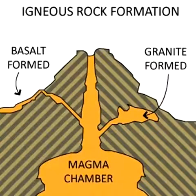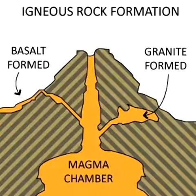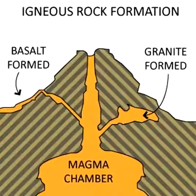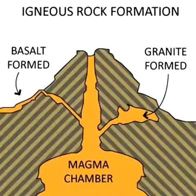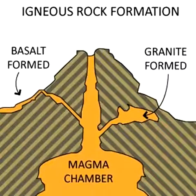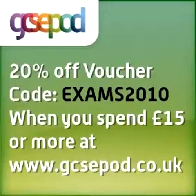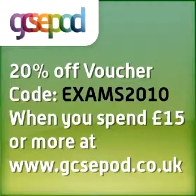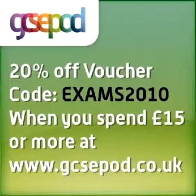Some igneous rocks are formed below ground where magma gets into other rocks. Granite is an example of this and can be seen today on the Earth's surface because the other rocks above it have been eroded away over millions of years. Other igneous rocks are formed when magma is ejected onto the Earth's surface — basalt is an example of this type of rock. The Giant's Causeway in Northern Ireland is basalt formed in this way.